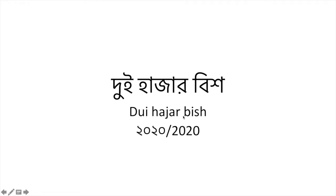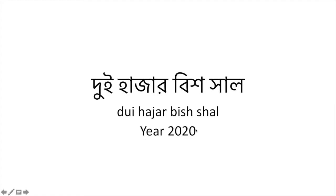I've also written that in English, and that's how you write it in Bangla. So 'dui' is two, 'hajar' is thousand, and 'bish' is twenty. Did you get it right? I think I got it right. So if you want to say 'year 2020,' you just add 'shal' at the end of 'dui hajar bish' — so 'dui hajar bish shal' means year 2020.